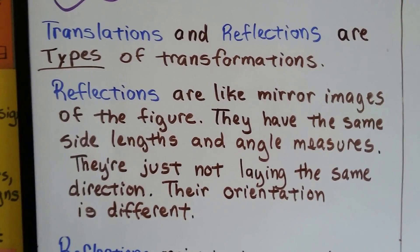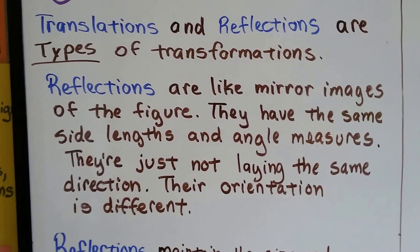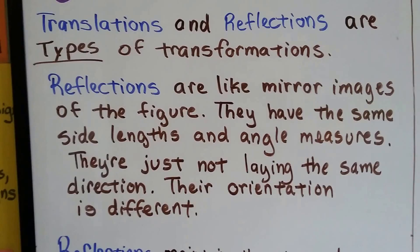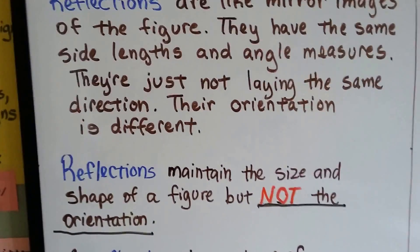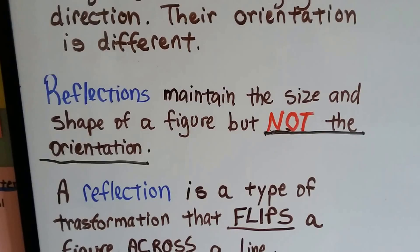Reflections are like mirror images of the figure. They have the same side lengths and angle measures, and they're just not laying the same direction. Their orientation is different. Reflections maintain the size and shape of a figure, but not the orientation.